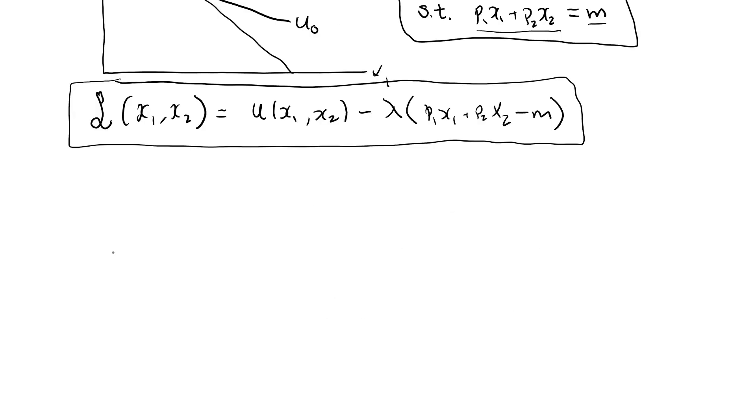To find the solution of a constrained optimization problem, we do the partial derivative of the Lagrangian with respect to x1. That's going to be, well, first we differentiate this with respect to x1, the u, the x1. Then we have a minus lambda p1 x1, and the derivative of this with respect to x1 is minus lambda p1.